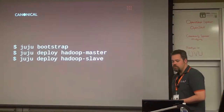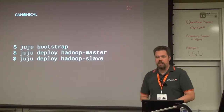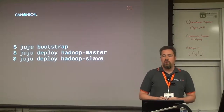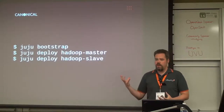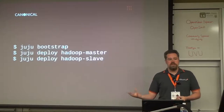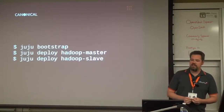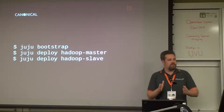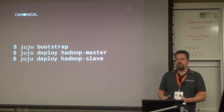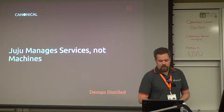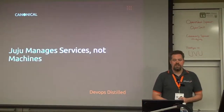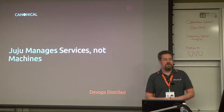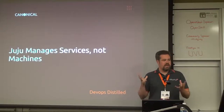What Juju charms are is basically what we call DevOps distilled, where we go out and work with various subject matter experts to take what they know best and distill it into a charm, which is just basically a set of scripts that describe how to do something. And Juju manages services, not machines.